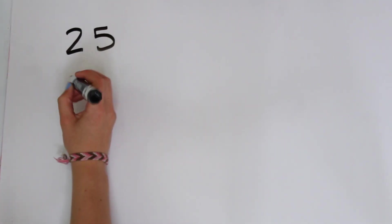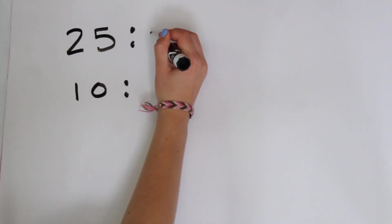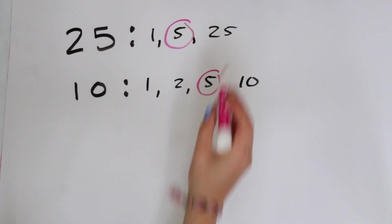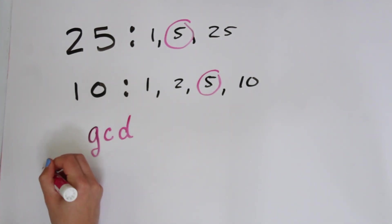In elementary school we used the method of just writing out all of the factors. So for 25 and 10 we'd see that the biggest common factor is 5.